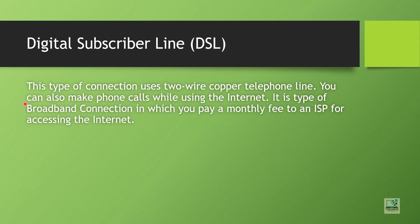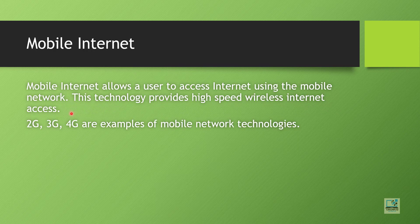Next is Digital Subscriber Line, also known as DSL. This type of connection uses a two-wire copper telephone line. You can also make phone calls while using the internet. It is a type of broadband connection — an advanced form — and you pay a monthly fee for accessing the internet.